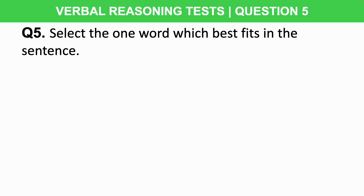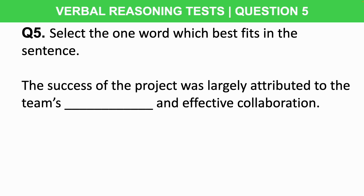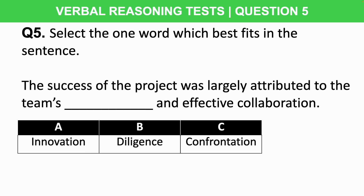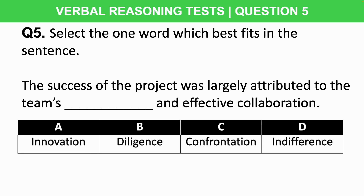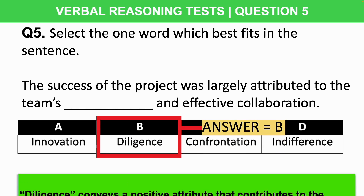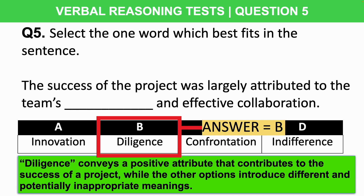Let's move on to the verbal reasoning test now. Select the word which best fits the sentence: 'The success of the project was largely attributed to the team's [blank] and effective collaboration.' Is the missing word A) innovation, B) diligence, C) confrontation, or D) indifference? The metal verbal reasoning test evaluates an individual's ability to understand and interpret written passages, assessing reading comprehension, logical reasoning, and language proficiency. The correct answer is B, diligence — it conveys a positive attribute that contributes to the success of a project, while the other options introduce inappropriate meanings.